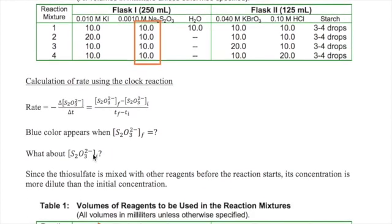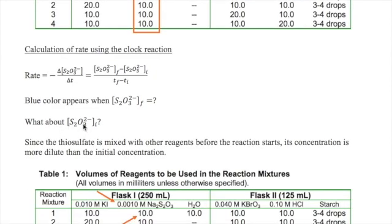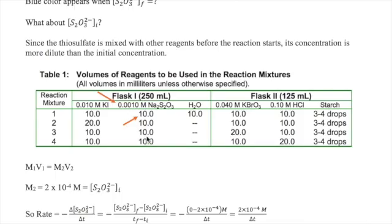Now let's think about this. What must the final concentration of thiosulfate be when the blue color shows up? That only happens when the thiosulfate is completely gone. So it must be zero based on what we discussed before. Now what about the initial thiosulfate concentration? Well, we must look at actual values used in the mixture. Notice that in table one, we see 0.001 molar thiosulfate.